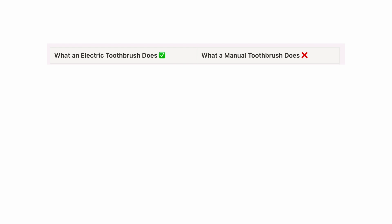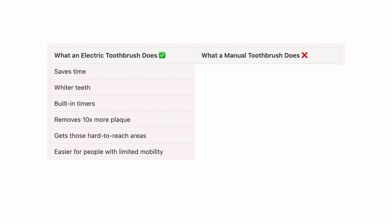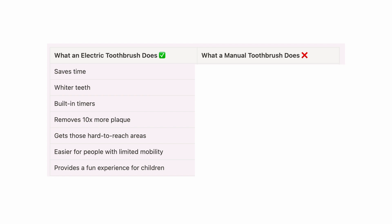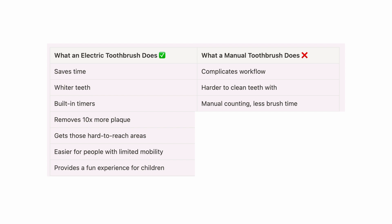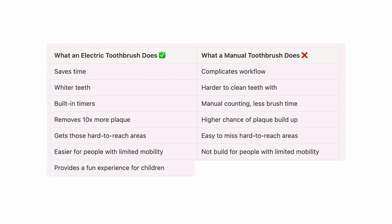For example, an electric toothbrush versus a manual toothbrush: the electric toothbrush saves time, gives you whiter teeth, has built-in timers, removes 10% more plaque, gets hard-to-reach areas, is easier for people with limited mobility, and provides a fun experience for children. By comparison, a manual toothbrush complicates workflow, is harder to clean with, requires manually counting brush time leading to dirtier teeth, has a higher chance of plaque buildup, misses hard-to-reach areas, isn't built for people with limited ability, and is a dreaded two-minute experience for kids. You can also simply bullet point the key benefits of your product or service.